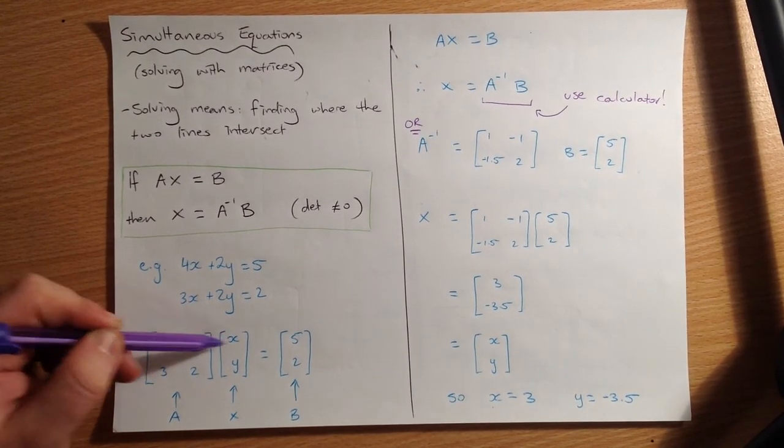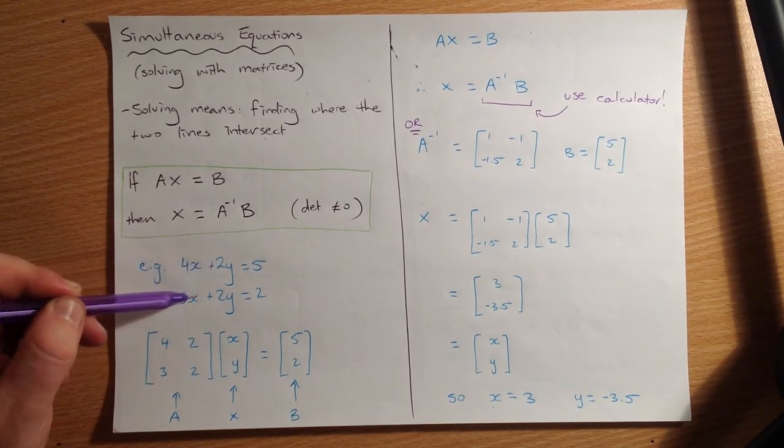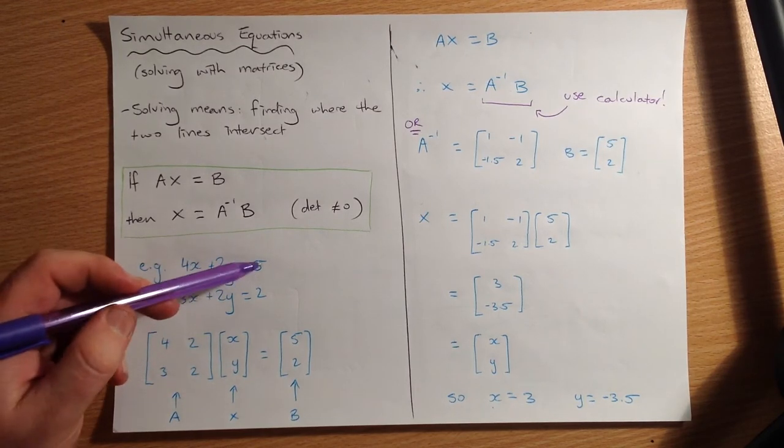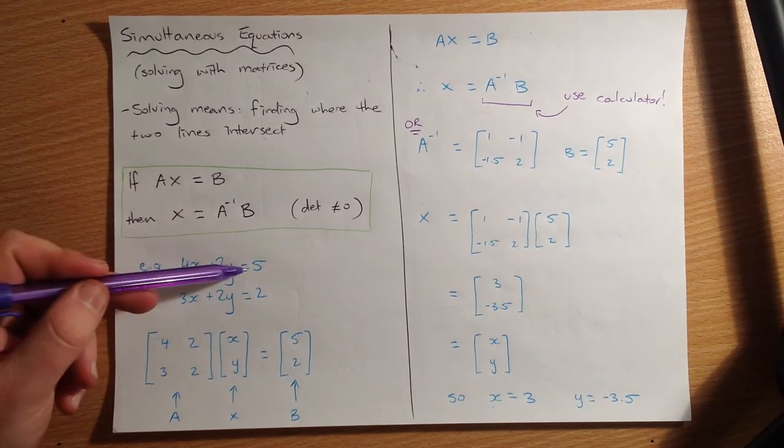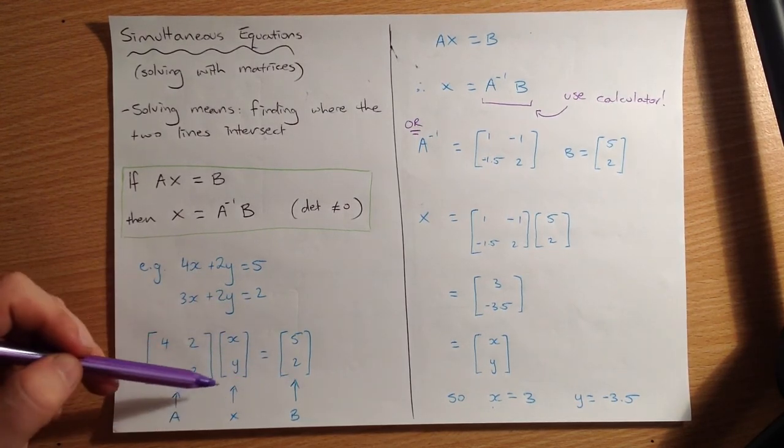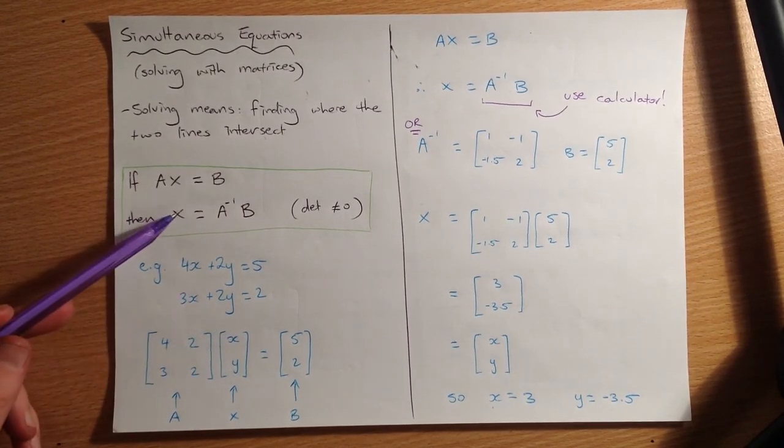I promise you that if you multiplied these two out, it would equal 4X plus 2Y and 3X plus 2Y. And you could check that with the calculator if you want. And these right-hand sides here, we've done that over here on the right-hand side of the equals. So this is the way you just have to remember, we put a simultaneous equation into a matrix. So this is the matrix we call X, the XY thing.